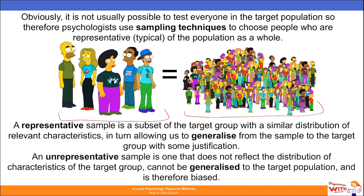However, if your sample is unrepresentative — for example if you've just got a sample of purely males or only females — it means that it doesn't reflect the distribution of the characteristics in the target group, so in your wider population. Therefore you can't generalize it to the target population and your sample would be biased.